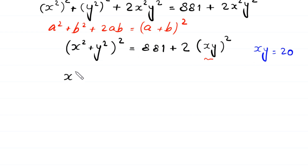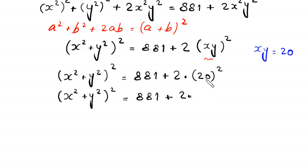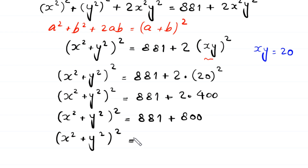So this will become x squared plus y squared whole squared is equal to 881 plus 2 times 20 squared, which is 400. Next, x squared plus y squared whole squared is equal to 881 plus 2 times 400, giving 800. And x squared plus y squared whole squared is equal to 881 plus 800, which becomes 1681.